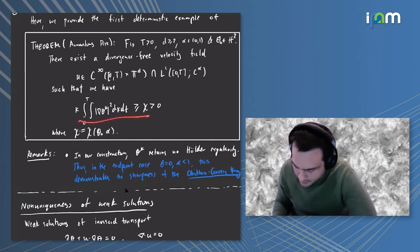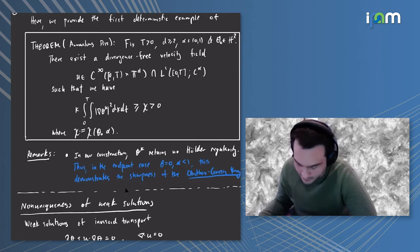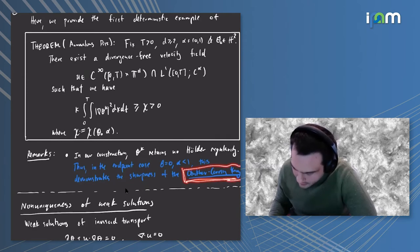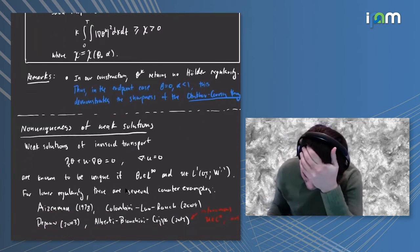This result demonstrates the sharpness of the Obukhov-Corrsin theory insofar as it's the endpoint case of these Onsager theorems. At the end of the talk I'll make some remarks about potentially more interesting extensions where this theory may hold.